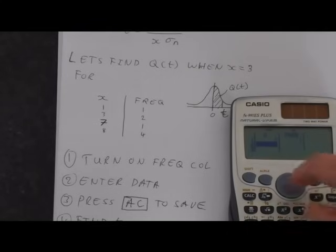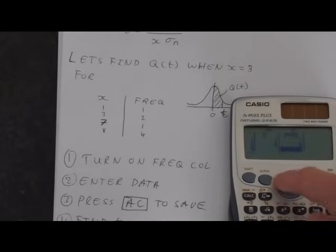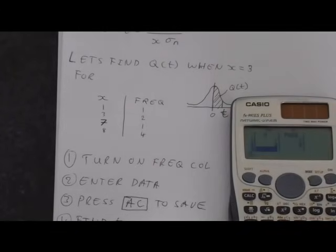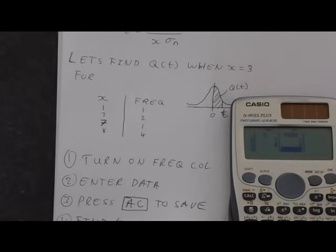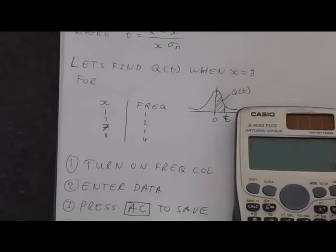We're doing 1. We've got 3, and we've got 2, 3. So we've put a 2 in the frequency column. 7. And then we've got 8. And we've got 4 of those. I've put a 4 in the frequency column. Just entered that data here. As usual, press AC to save. That's now in memory.